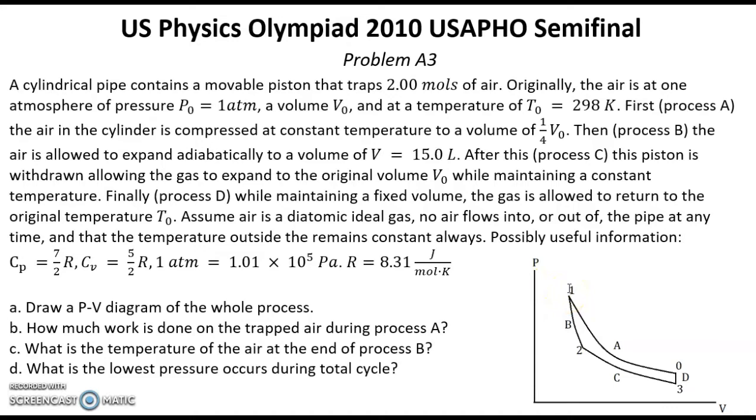After that we have adiabatic expansion from point 1 to point 2. That's process B. During this expansion temperature is going down. Then we have isothermal expansion from point 2 to point 3. Because this isotherm has a lower temperature than process A, we will get to point 3 with lower pressure than in point 0. The last process D is an isochoric process during which pressure and temperature go up to point 0. That's the answer for question A.